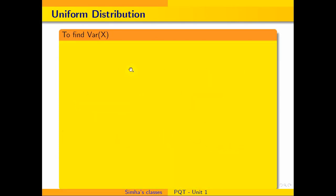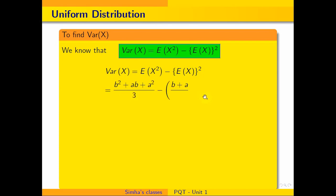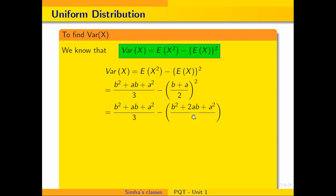Now we find the variance. The formula for variance is E(x²) − [E(x)]². Substituting: E(x²) = (b²+ab+a²)/3, and [E(x)]² = (a+b)²/4 = (b²+2ab+a²)/4. Taking the LCM of 3 and 4, which is 12, we expand and simplify the numerator.